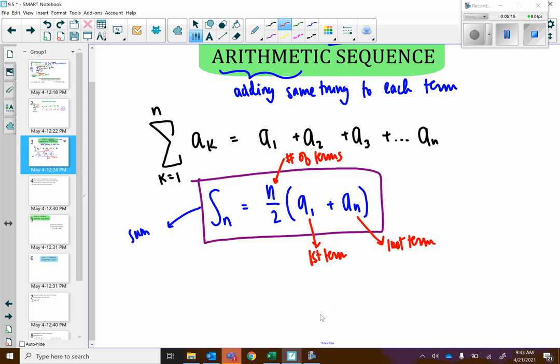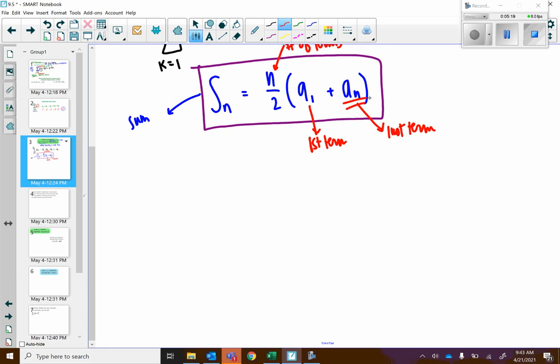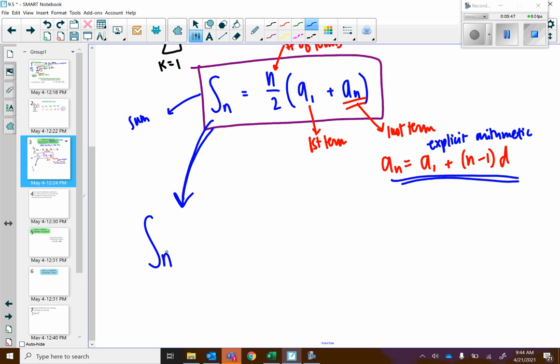As I mentioned, we can do more with this formula because we know the general equation for any term in an arithmetic sequence. If you remember, a sub n for an arithmetic sequence is equal to the first term plus n minus 1 times d. This was our explicit formula for an arithmetic sequence. So what if we take this and plug it into our formula for the sum? So the sum of a finite arithmetic sequence is really, I'm still keeping the n divided by 2, I'm still keeping a1, but instead of a sub n, I'm going to add in this little guy. So a1 plus n minus 1 times that common difference.